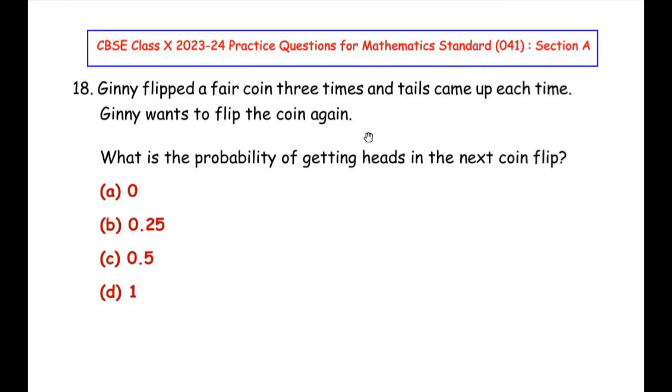This question is from the probability chapter. Genie flipped a fair coin three times and tails came up each time. Genie wants to flip the coin again. What is the probability of getting heads in the next coin flip?